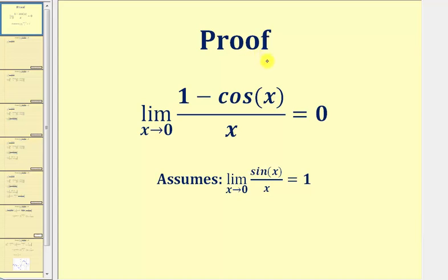We'll come to a proof that the limit as x approaches zero of the quantity one minus cosine x divided by x equals zero. The proof will assume we already know the limit as x approaches zero of sine x divided by x equals one.